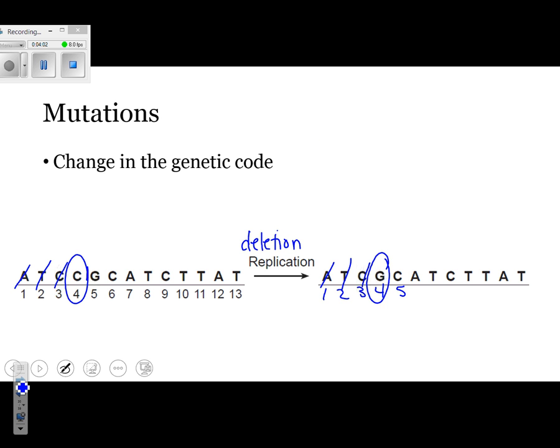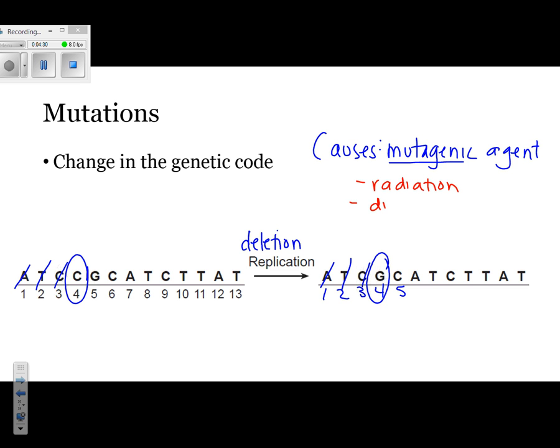Now, what causes mutations? Anything that is a mutagenic agent, that's the fancy word they like to use. Sometimes you just need to use your context clues. Mutagenic kind of looks like mutation. What are some examples of things that can cause mutations? They can include things like radiation, drugs, cigarettes, the sun, chemicals.